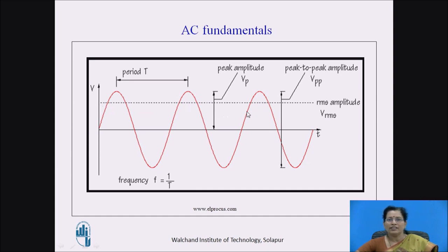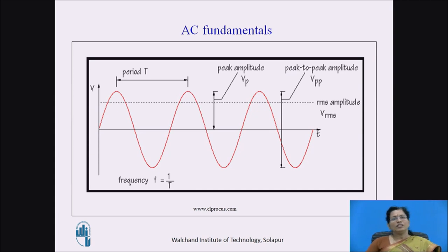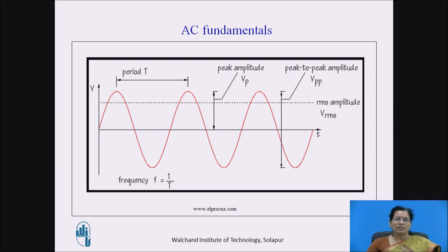One more term indicated here is the RMS value. Why do we use the RMS value? Since the AC value continuously changes its magnitude, we need to indicate that AC voltage by a single value. Generally, we use the RMS value to indicate AC voltage. In India, 50 Hz is the standard frequency, and 230 V at 50 Hz is the standard voltage used in homes.